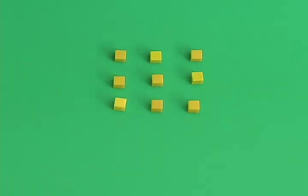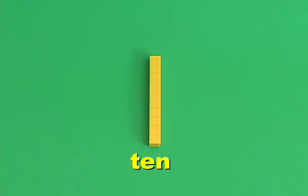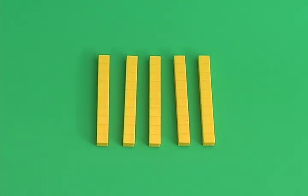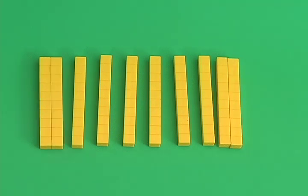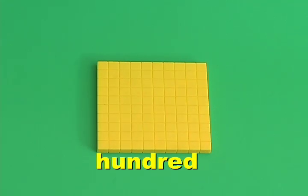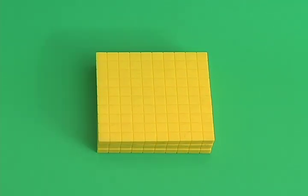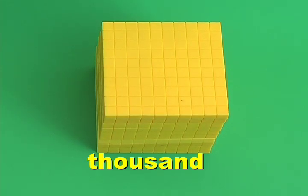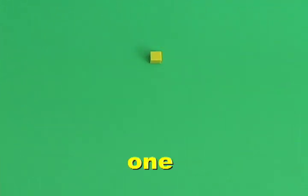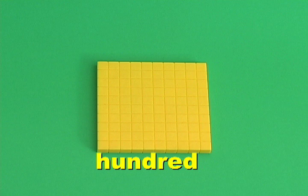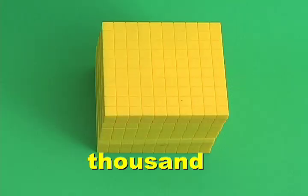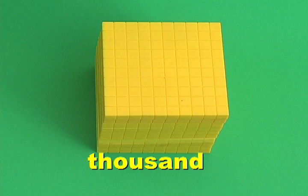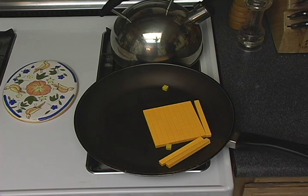If you have ten ones, it looks like this. This is a ten. If you have ten tens, it looks like this. This is a hundred. And if you have ten hundreds, it looks like this. This is a thousand. So remember: one, ten, hundred, thousand.